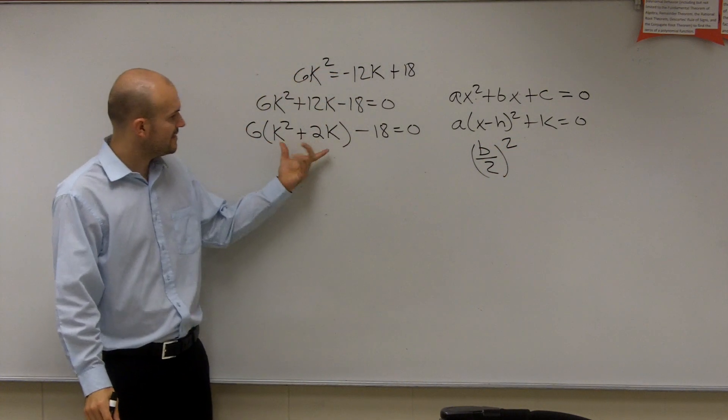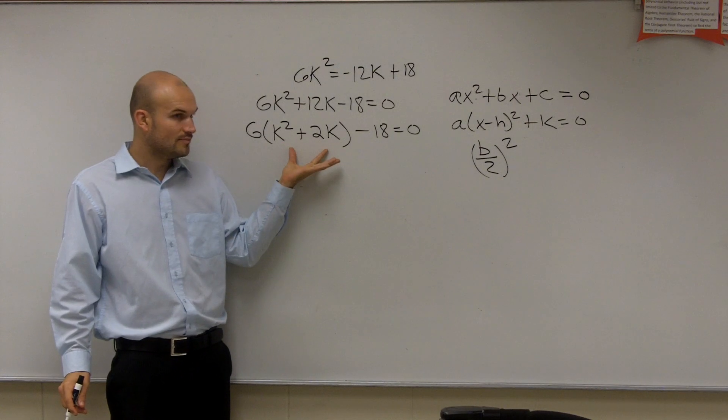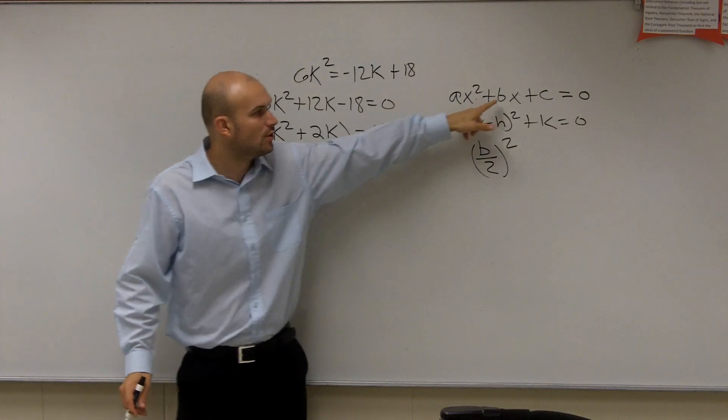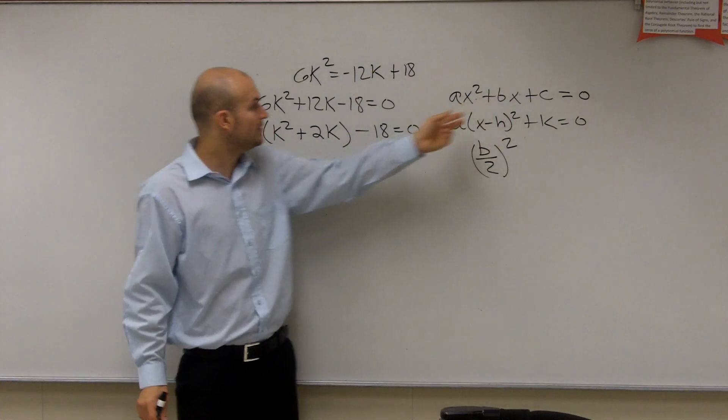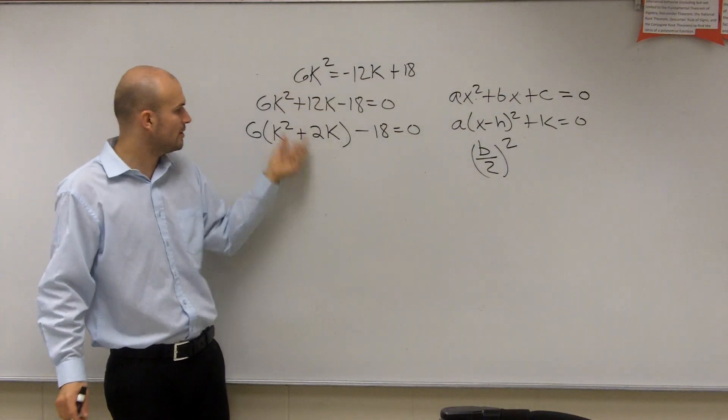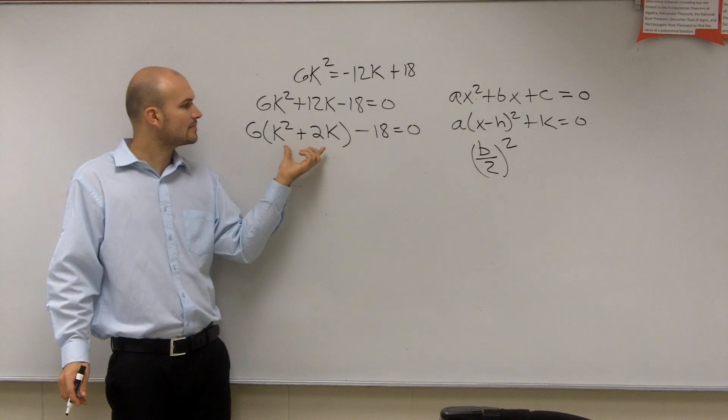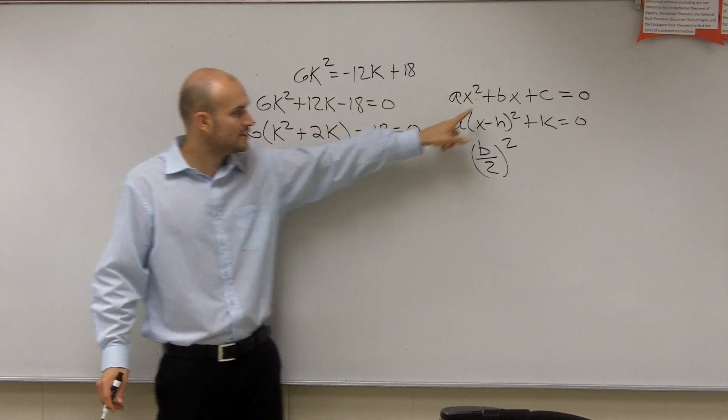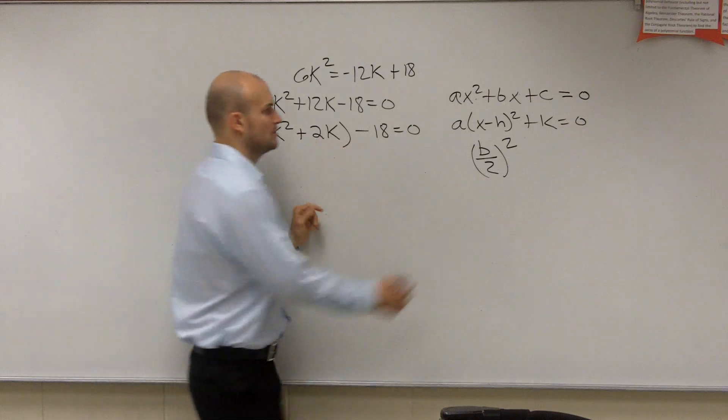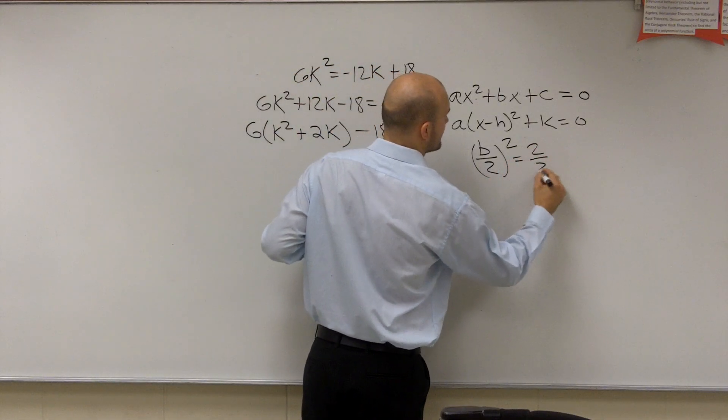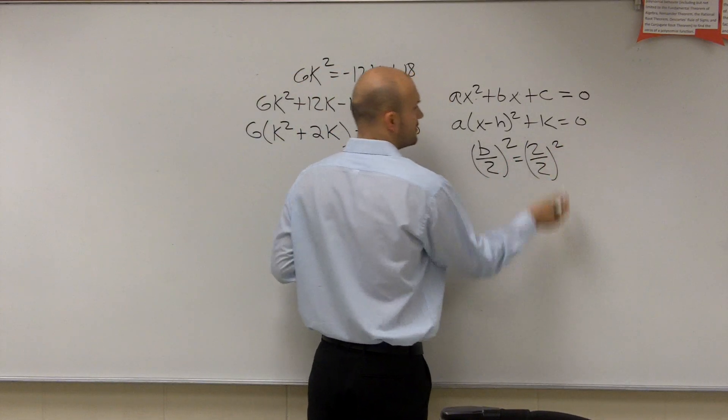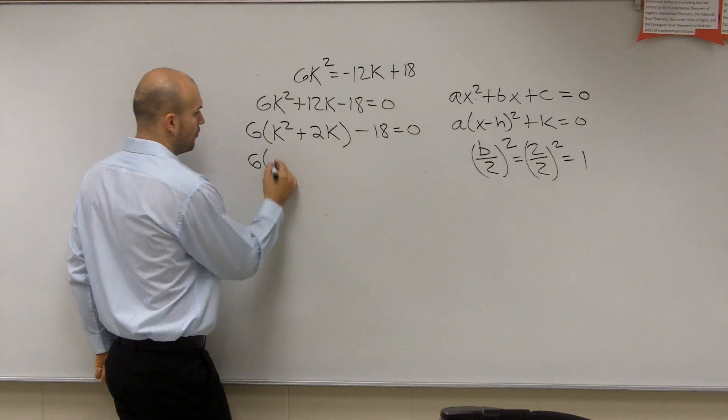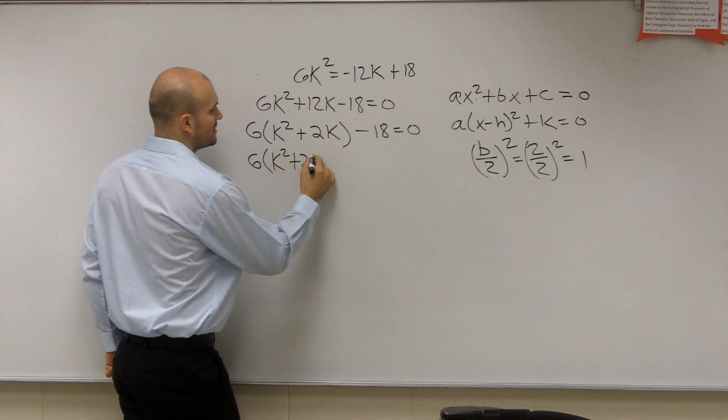So in this case, in this binomial right here, you can see that 2 is going to be my b. It's the coefficient of my linear term. We don't even want to go back up to here. We want to talk about our terms inside the parentheses. Our coefficient of our linear term is b, which is 2. So what I have is 2 divided by 2 squared, which is 1. 1 squared is equal to 1. So I'm going to add 1 inside the parentheses.